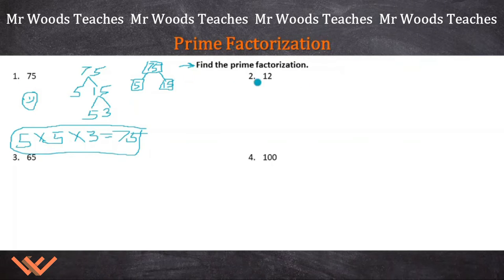Let's look at number 2. Number 2, we start out with 12. I know that 2 times 6 is 12, and I know that I can break this down even further that 2 times 3 is 6. Write it out. 2 times 2 times 3 is equal to 12.